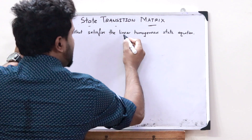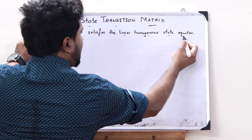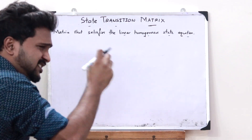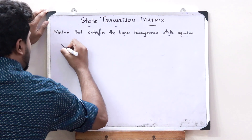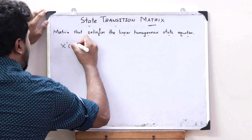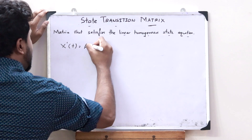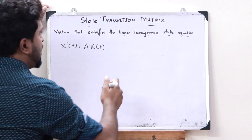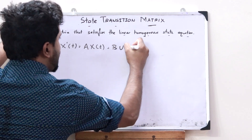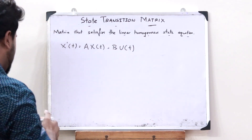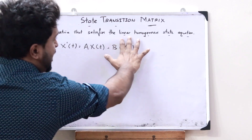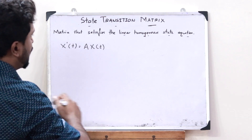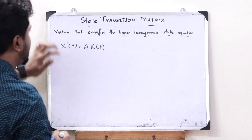What do you actually mean by a linear homogeneous state equation? This is very simple. A linear homogeneous state equation is nothing but a particular state equation given by x'(t) = A·x(t). In the case of a dynamic state equation, we also had something called B·u(t), but in the case of a linear homogeneous state equation, this particular term is absent.